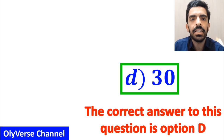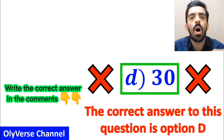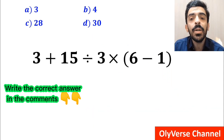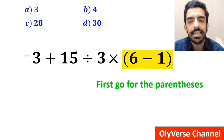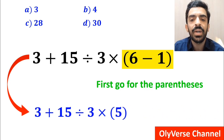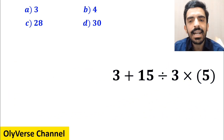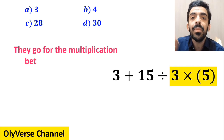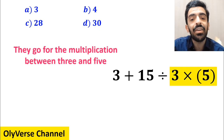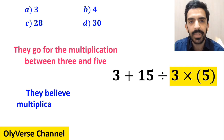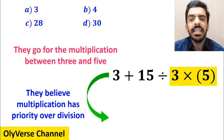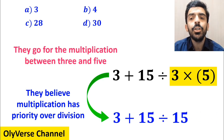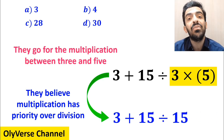However, this answer is absolutely wrong. Also, some other people when solving this question first go for the parenthesis and rewrite this expression as 3 plus 15 divided by 3 times 5. In the next step they go for the multiplication between 3 and 5, because they believe multiplication has priority over division. So this expression simplifies to 3 plus 15 divided by 15.